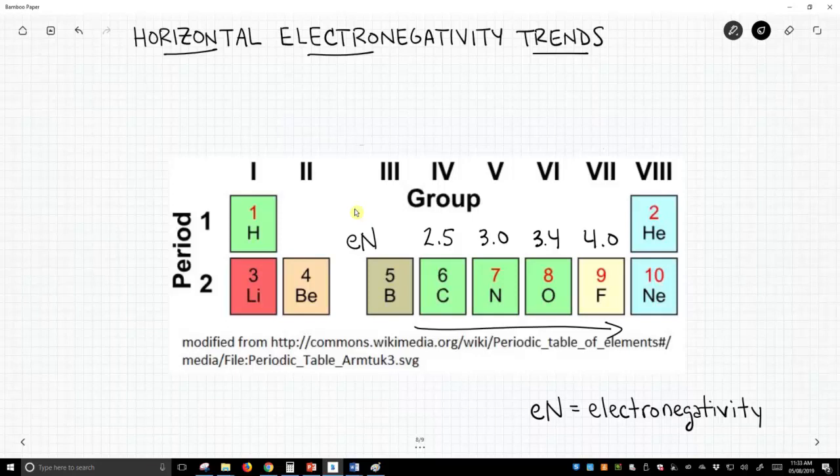Carbon has an electronegativity of 2.5, nitrogen is 3.0, oxygen is 3.4, and fluorine is 4.0. So why does this happen?